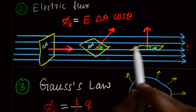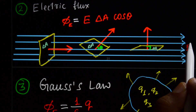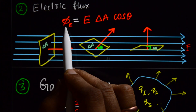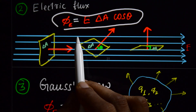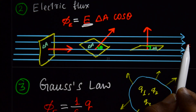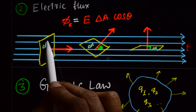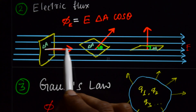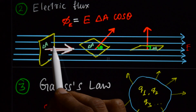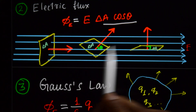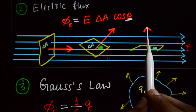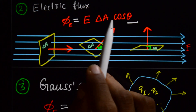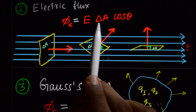Now, instead of water, consider electric field. The flux through this surface is equal to E — that is electric field — into delta A — that is area — into cos theta. When theta is zero, the flux through this area is maximum. When theta is 90, the flux through this area is zero. That is the electric flux expression.